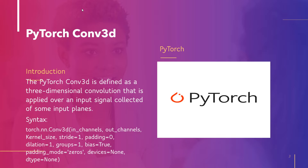The first parameter is in_channels, which is used as the number of channels in the input image. The next parameter is out_channels, used as the number of channels produced by the convolution. The next parameter is kernel_size, used to define the size of the convolutional kernel. The next parameter is stride, which is used to control the stride for the cross-correlation and accepts a single number or a one-element tuple.